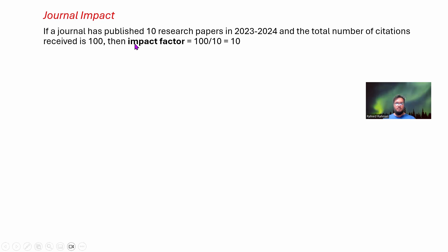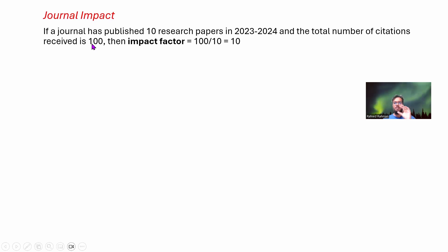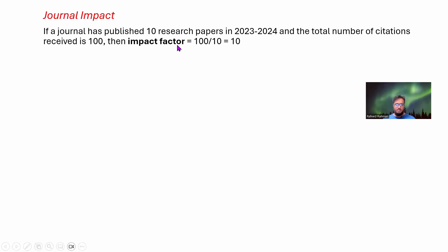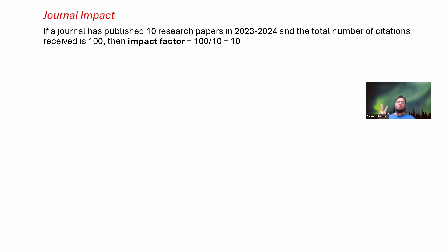Similarly, highly impactful journals have a lot of citations in their published papers. The most common metric people use is the impact factor. It's a very simple metric: if a journal has published 10 research papers in the last two years (e.g., 2023–2024) and the total number of citations received in the current year 2025 is 100, then the impact factor for 2025 is 100 divided by 10, which equals 10. That means the average citations made in the current year for the last two years of publications is 10. Anything above 4 or 5 is quite good in terms of impact factor.